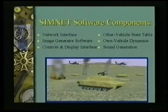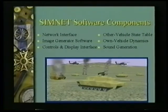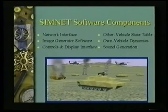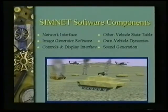Here's a picture from SimNet — you already saw it in the film. The SimNet software contains six components. The first component was the network interface. You had to write software responsible for taking information about you and publishing it onto the network so other people know where you are and what you're doing. You also had to have the software listen to packets coming from other simulators so that you would know where other people were. That's the network interface software.